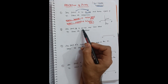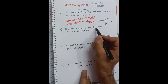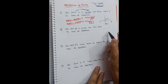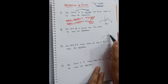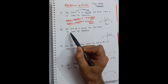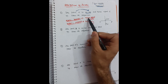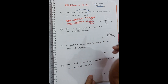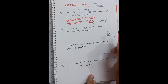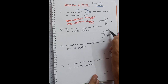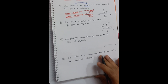Next problem: point A is on HP and 50 mm behind VP — draw its projections. Draw the reference line. Since the point is on HP, it lies on the reference line — that is your front view, A-dash. Now for the top view: the relationship is with VP (50 mm behind VP), so we draw the top view. Since it is 'behind', the top view goes on the upper side of the reference line at 50 mm.